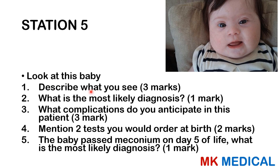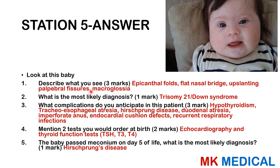Station five: look at this baby shown in the picture. Describe what you see. What is the most likely diagnosis? What complications do you anticipate? Mention two tests you would order at birth. The baby passed meconium on day five of life — what is the most likely diagnosis? You may pause the video.